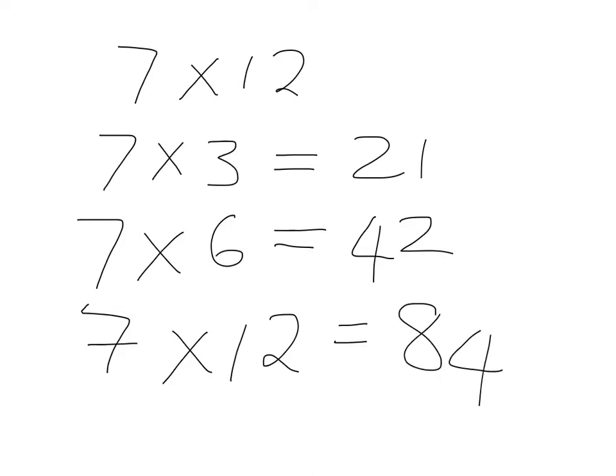So if I've forgotten something in the 12 times table I can rely on the 6 times table and from the 6 times table I can rely on the 3 times table.